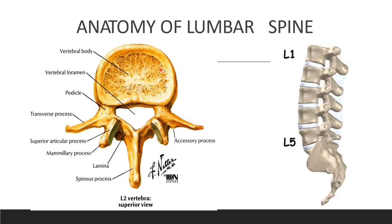Now we will discuss the anatomy of the lumbar spine. It has L1, L2, L3, L4, and L5 vertebrae, with an intervertebral disc between each vertebra. Each vertebra has a vertebral body, pedicle, transverse process, lamina, and spinous process, and it has a vertebral foramen through which the spinal cord travels.